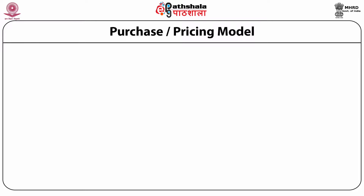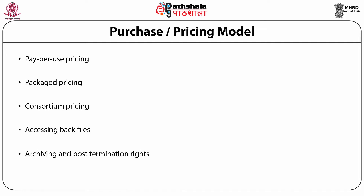Purchase pricing model: the vendor should offer a choice of pricing models from which libraries may select. These models could be based on various criteria including the number of simultaneous users and user population. Pricing models based on full-time equivalent should be based on the size of the actual user group and not the total user population. The vendor should be prepared to offer other pricing models such as pay-per-use pricing, packaged pricing, consortia pricing, back files, archiving and post-termination rights. The purchasing or leasing of electronic data should include a provision for perpetual access to that data.